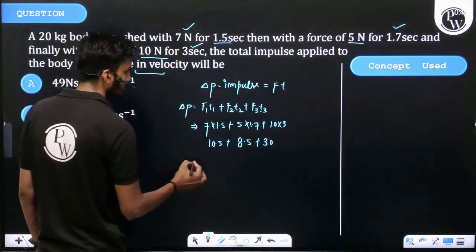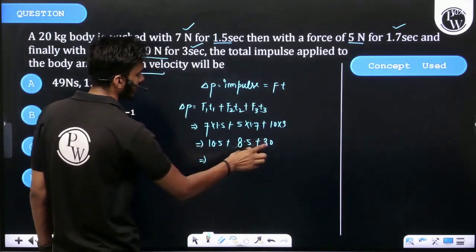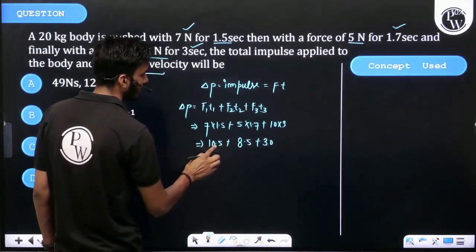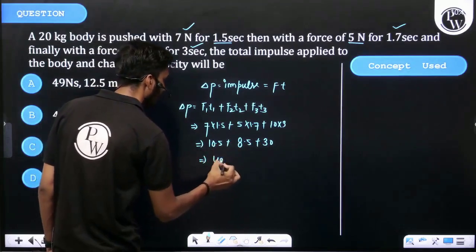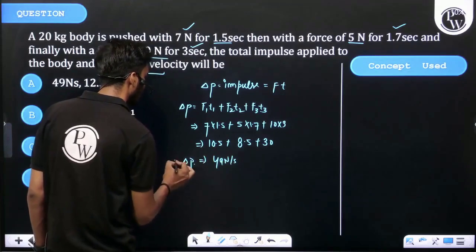Then we're getting change in momentum is equal to 30, 40, 48, 49 Ns. That is equal to change in momentum and it's called impulse.